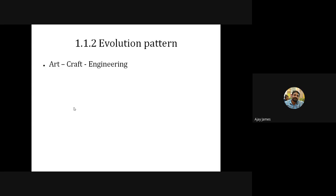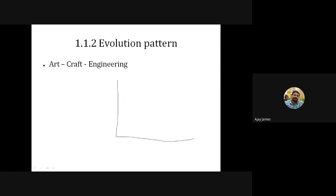The evolution pattern was like this: it was earlier days art, then it became craft for some time based on past experience, then after that, based on all the software developed during the art and craft phases, they tried to develop an engineering procedure. So it became engineering as technology grew.